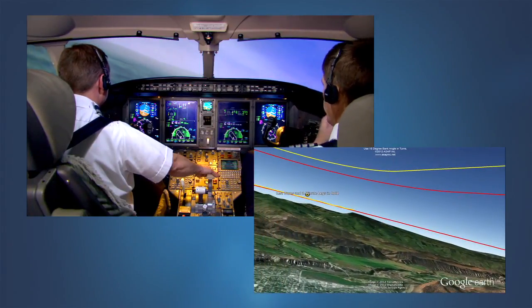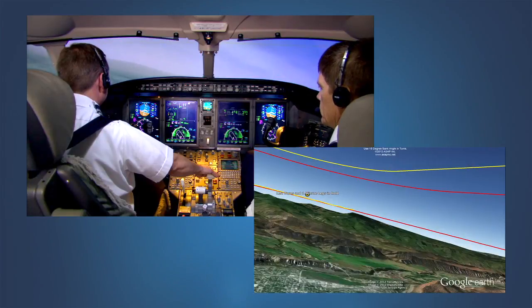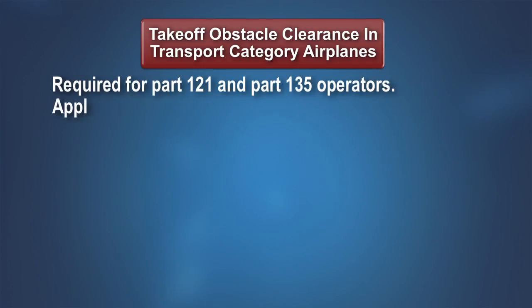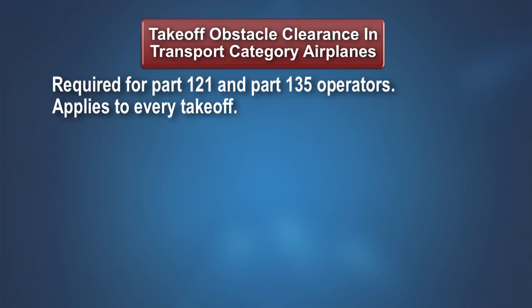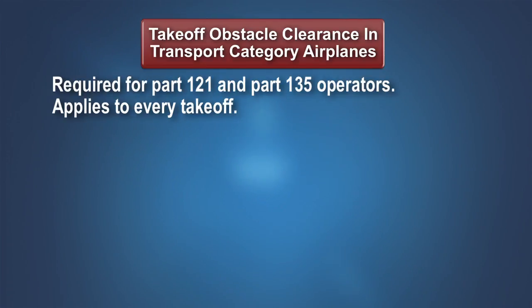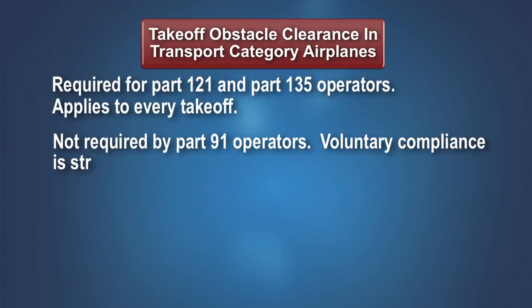As we bring the discussion to a close, it is beneficial to review a few key points. Part 121 and Part 135 operators of transport category airplanes have a legal requirement to ensure that the net takeoff flight path clears obstacles following an engine failure at or above V1 speed. These operators must consider takeoff obstacle clearance for every takeoff. It does not matter if the airplane is operated under instrument flight rules or visual flight rules, or if the weather conditions are VMC or IMC. Though not required, voluntary compliance is strongly encouraged for Part 91 operators.